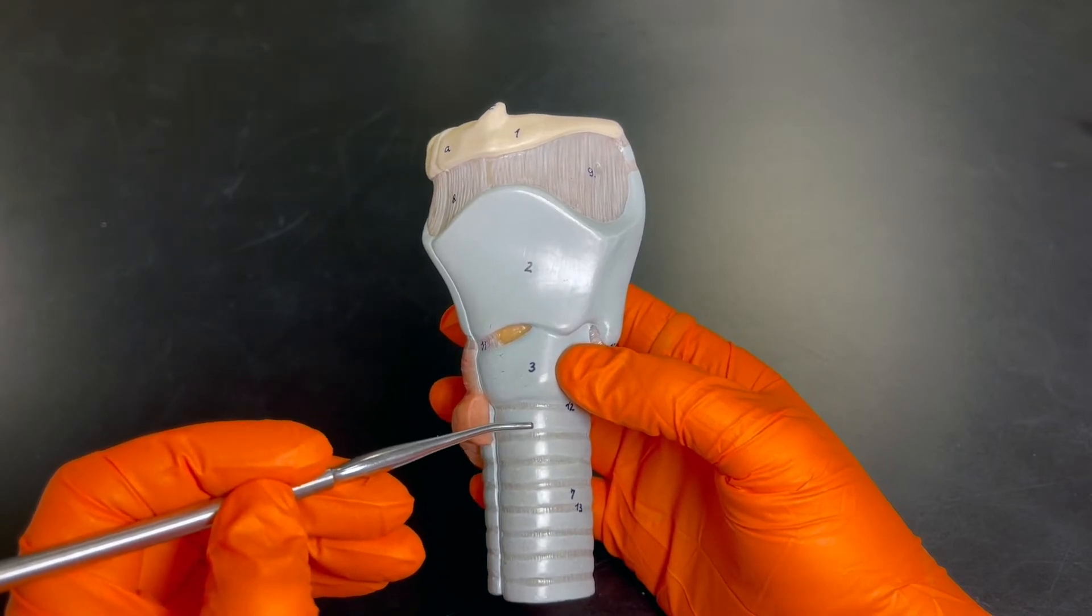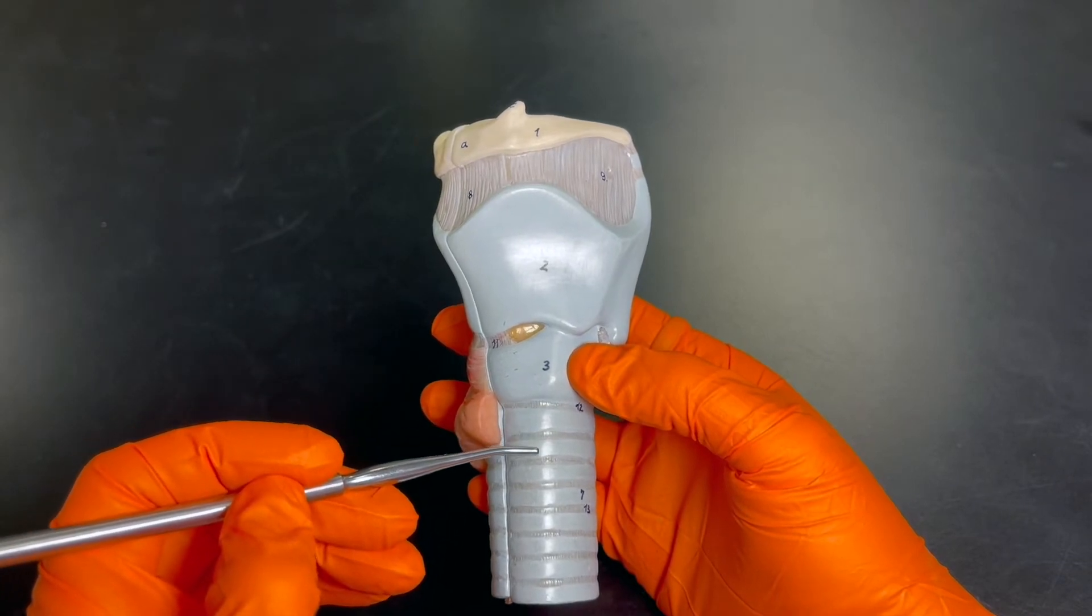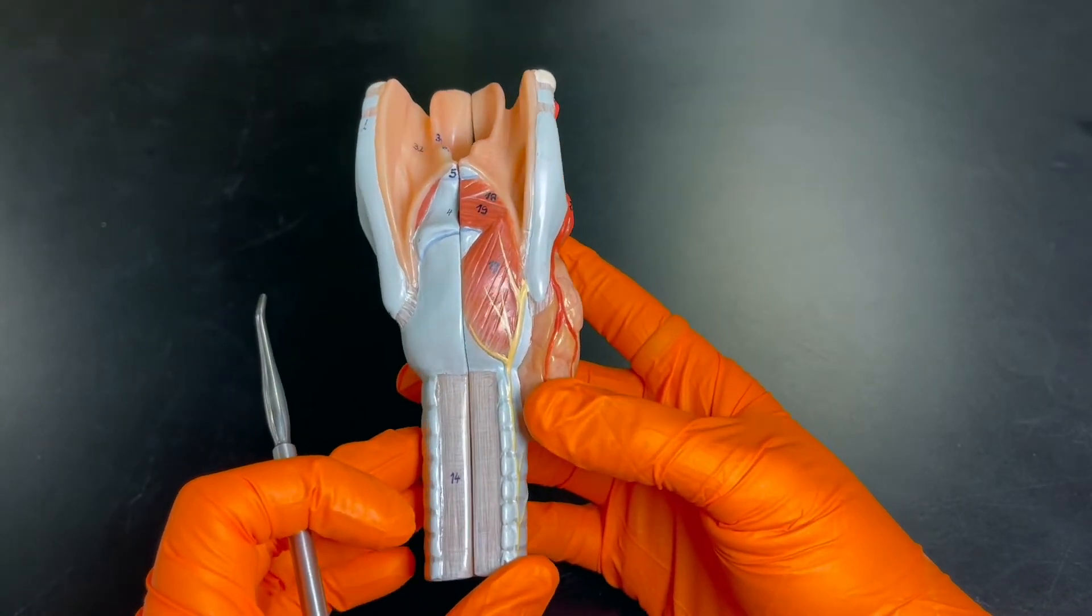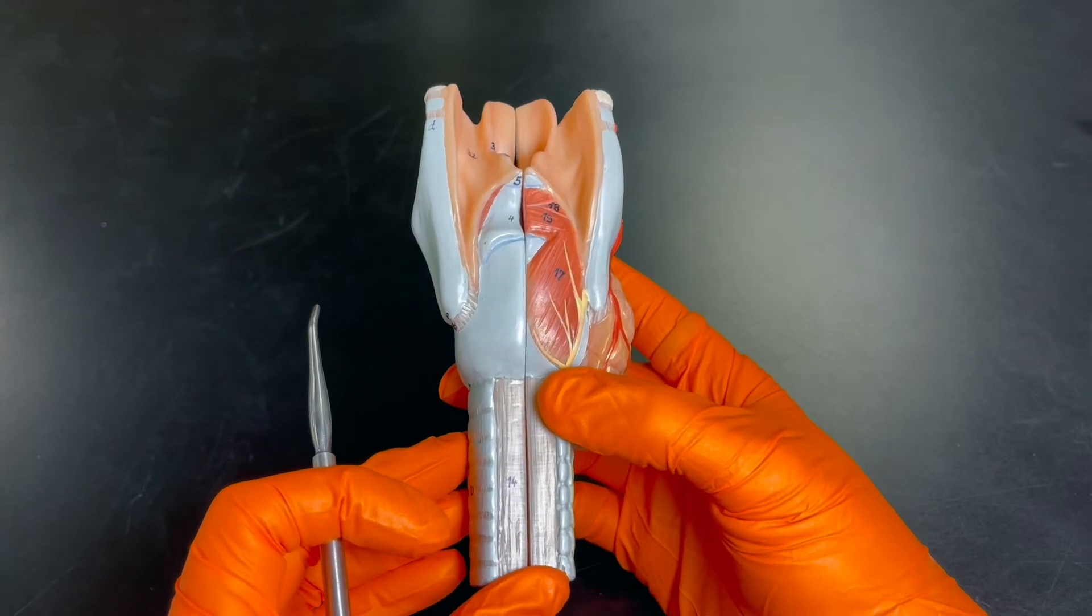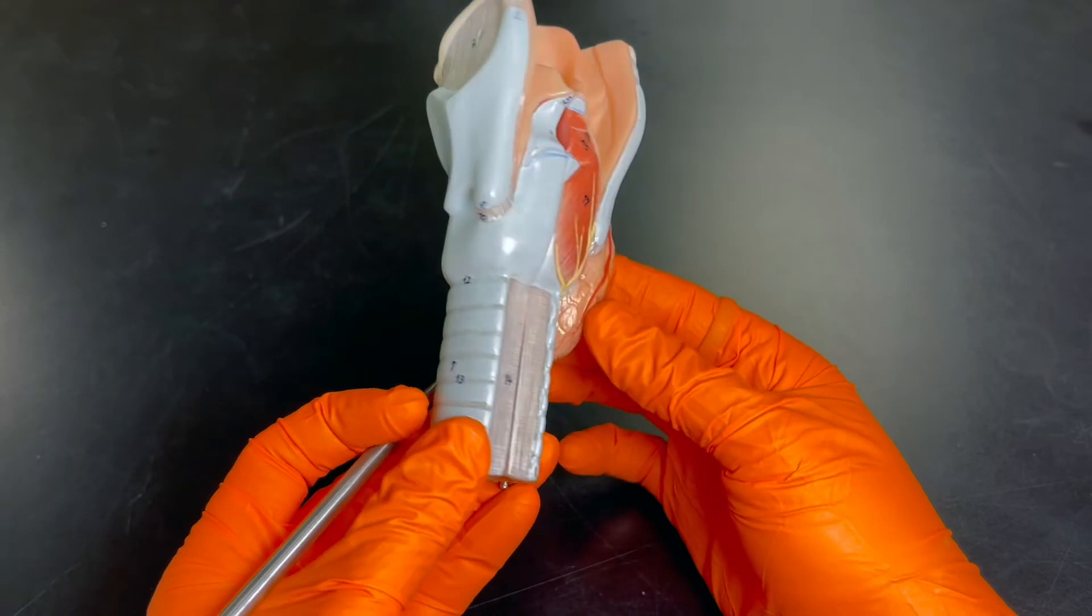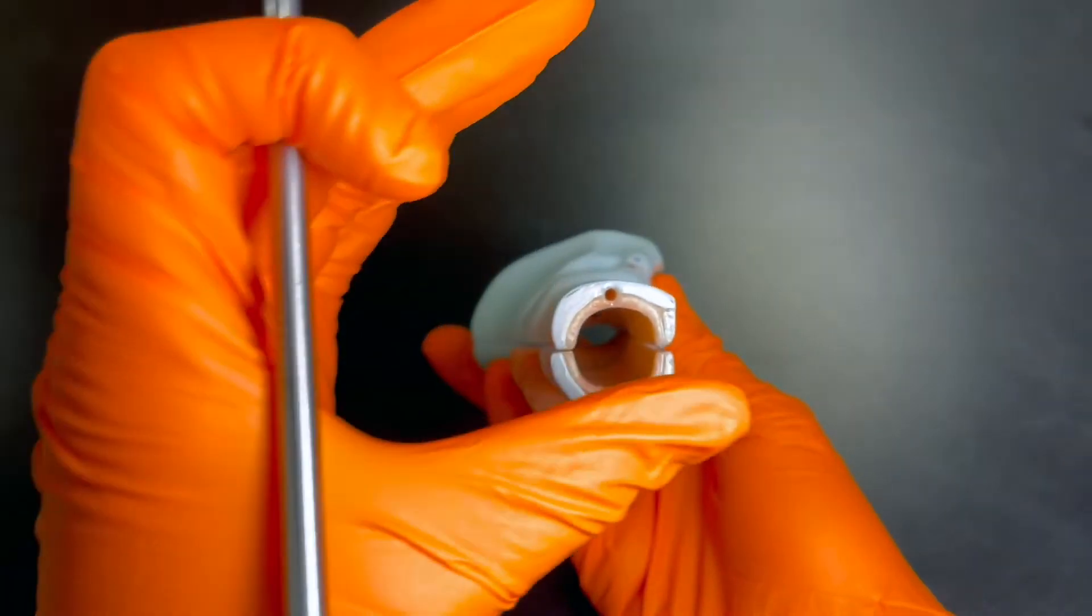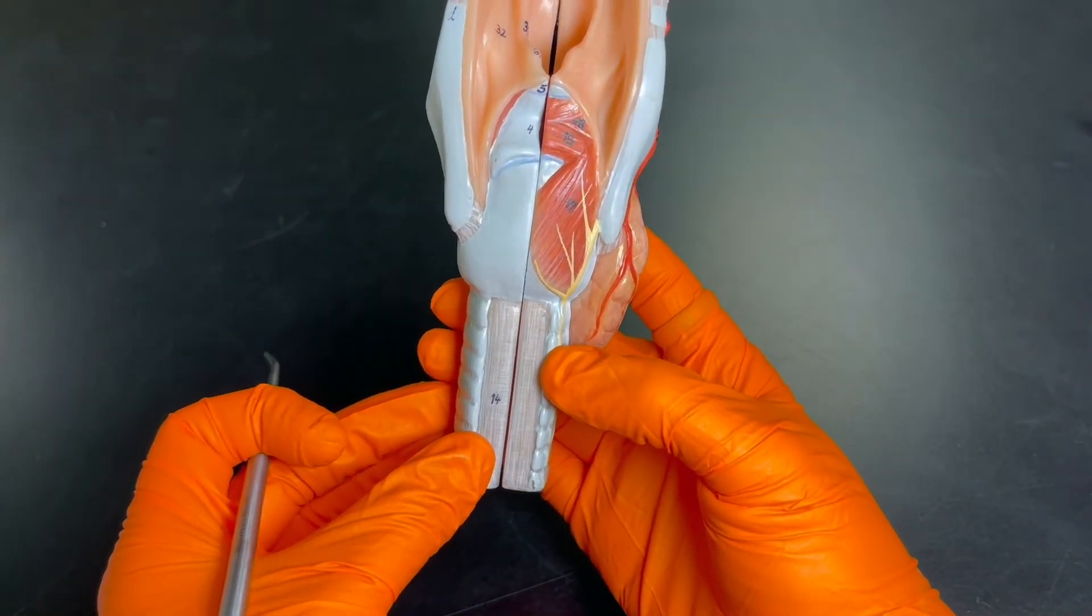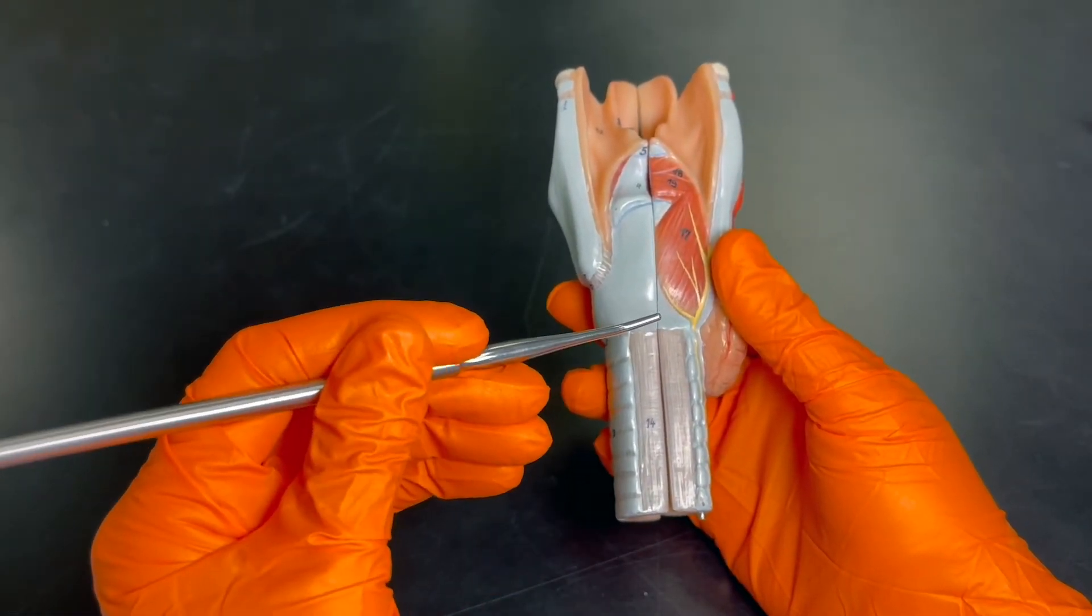The other thing we have is the trachealis muscle. Now the trachealis muscle is going to be more visible on the posterior side. You'll notice that these rings are kind of C-shaped, right, just like this. So we're not missing anything back here - it actually looks like this. And the reason why we have this portion open on the posterior side - remember, form follows function - there's almost always a reason as to why things look the way they do, which is really fascinating.